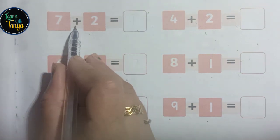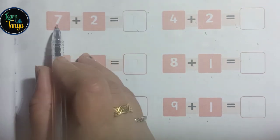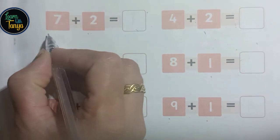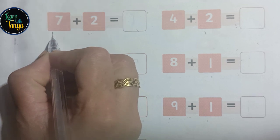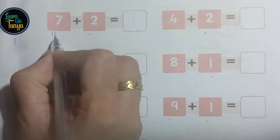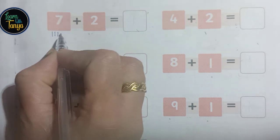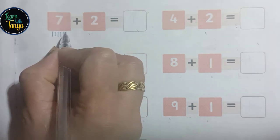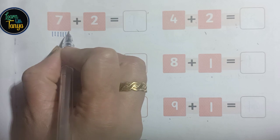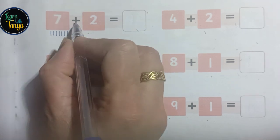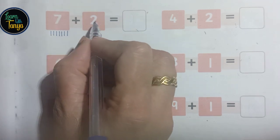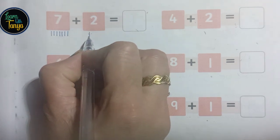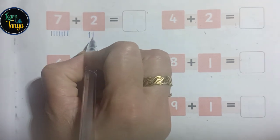7 plus 2. 7. 1, 2, 3, 4, 5, 6. 7 plus 2. 1, 2.